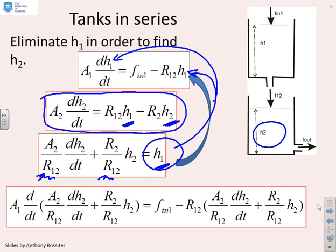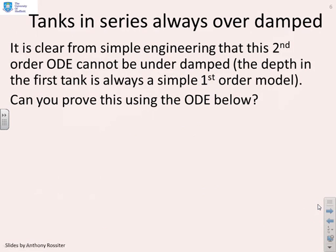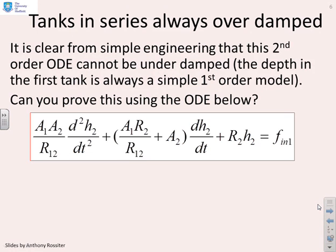So this is what we get. You'll notice at the top, we had A1 dh1/dt. And so you'll see that's this term here. I've got A1 d/dt of, and this bit in red brackets, you'll notice it's just h1. I then had f in minus, and you'll see the second term we had minus R12 h1. And so there we are, minus R12. And this bit at the bottom here is also h1. Now, if you look at the equation at the bottom, you'll notice it's written solely in terms of h2 and f_in1. Now, if I rearrange all that, here is the equation you get. And you'll see it's a second order differential equation.